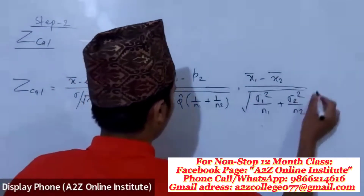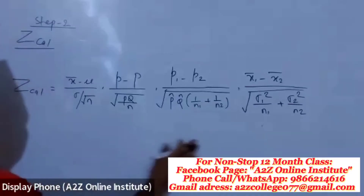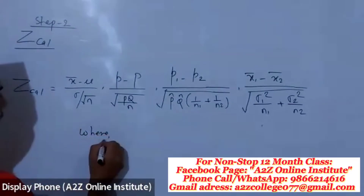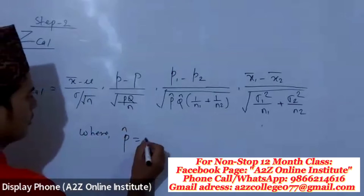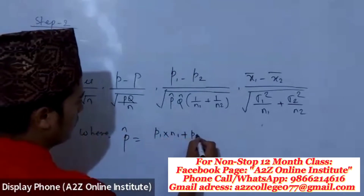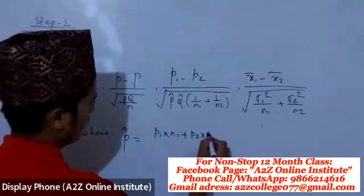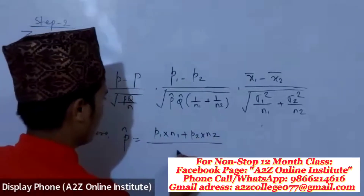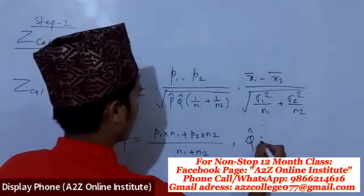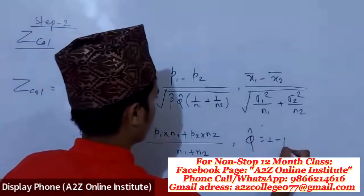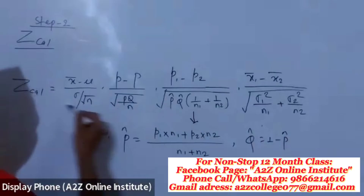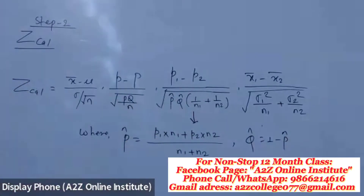Now, for double proportion, P-cap and Q-cap are given. P-cap is P1 into N1 plus P2 into N2 upon N1 plus N2, and Q-cap is 1 minus P-cap.